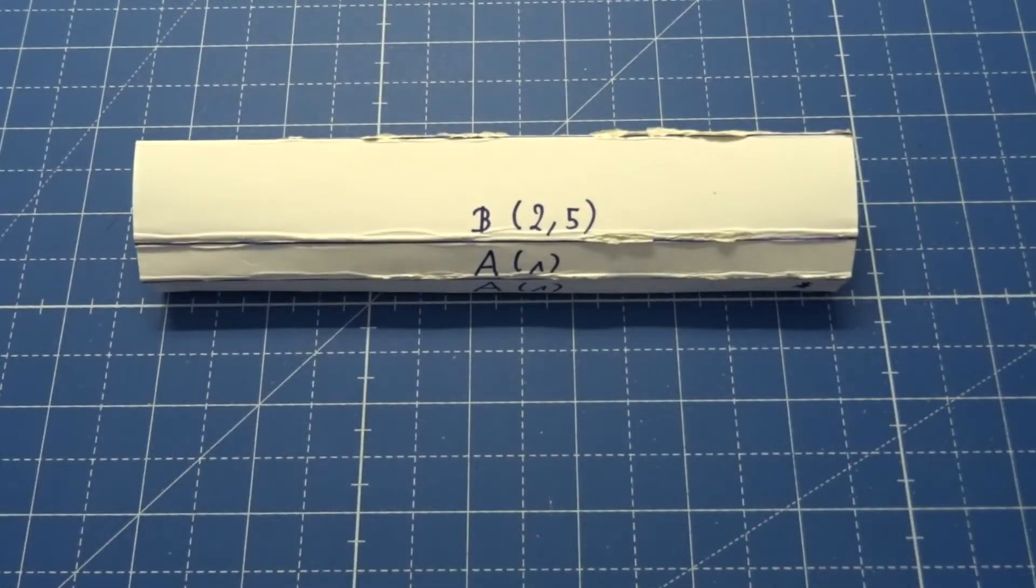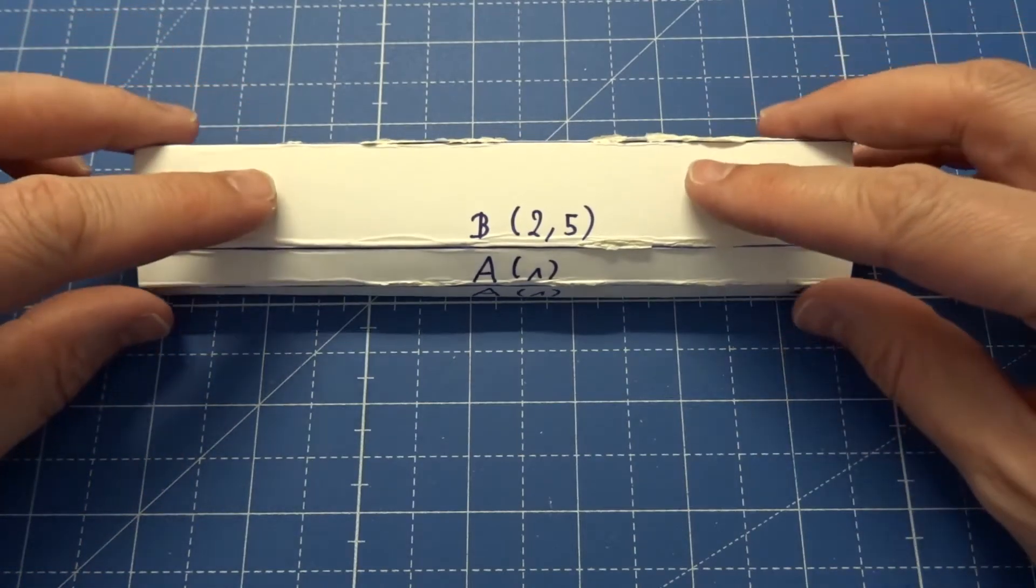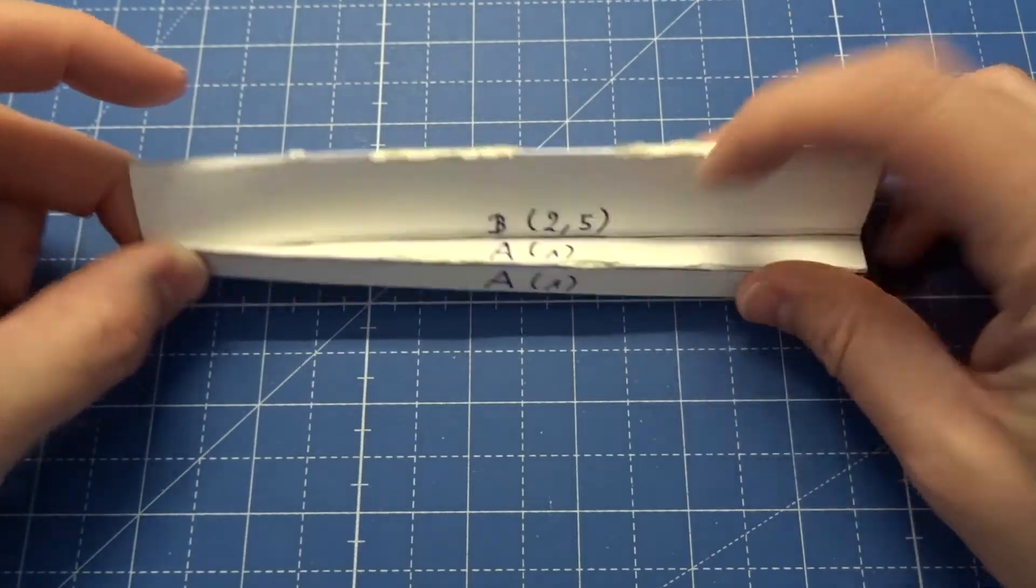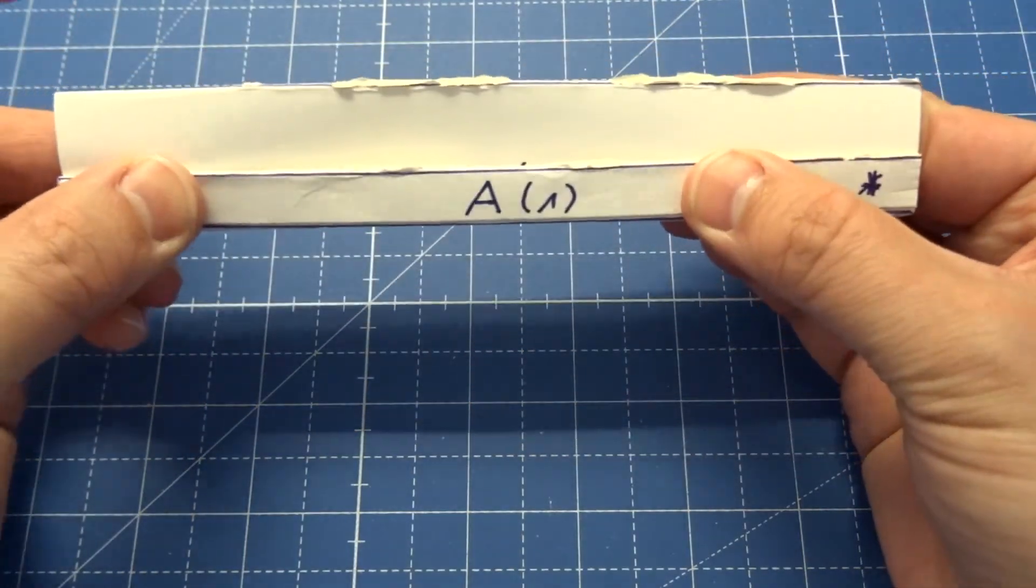So now that everything is glued together, the next step is to push the B area to the inside and to fold the A areas one on top of the other.